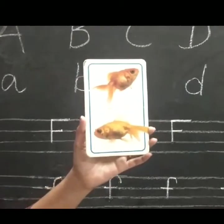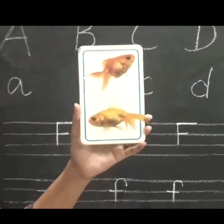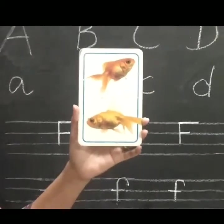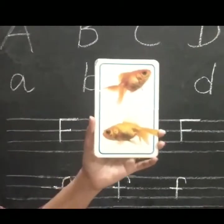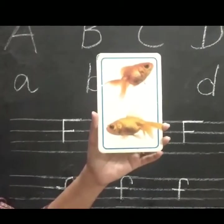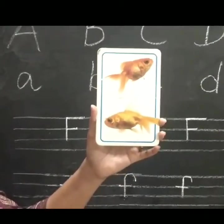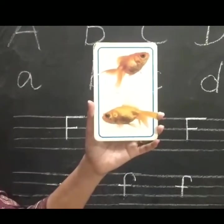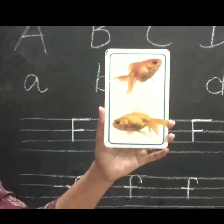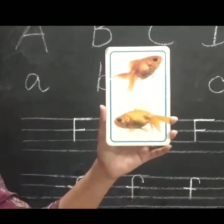Look at this picture children. What is this picture? Fish. Very good. F for fish. Repeat after me — F for fish. Very good. F for fish. This is called golden fish.